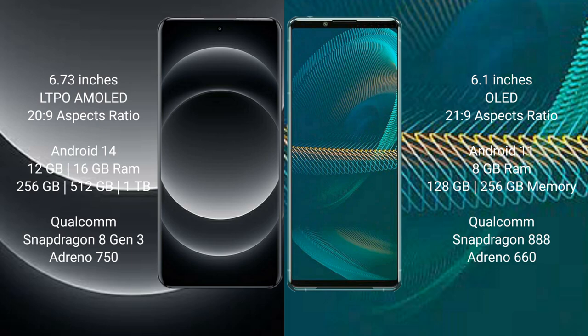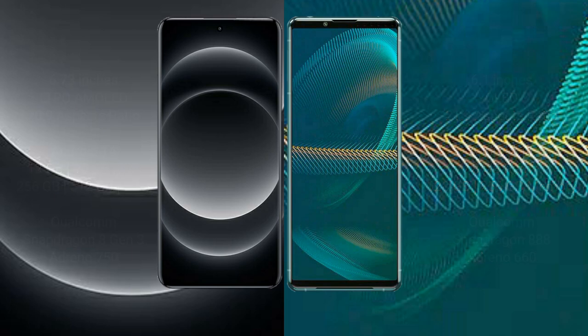Xiaomi 14 Ultra comes with 12GB or 16GB RAM and 256GB, 512GB, or 1TB internal storage, powered by the Qualcomm Snapdragon 8 Gen 3 processor with Adreno 750 GPU. Sony Xperia 5 Mark III comes with 8GB RAM and 128GB or 256GB internal storage, powered by the Qualcomm Snapdragon 888 processor with Adreno 660 GPU.